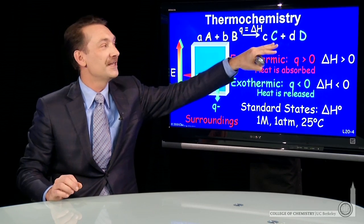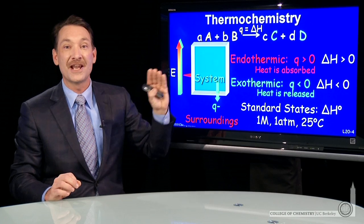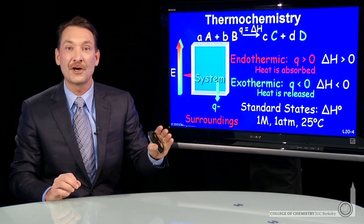We measure the difference in enthalpy between products and reactants by measuring the enthalpy change at a very specific set of conditions. Those specific conditions are called the standard state.